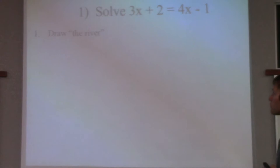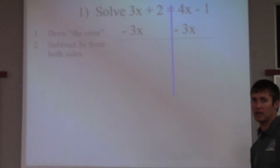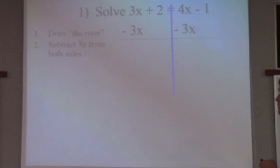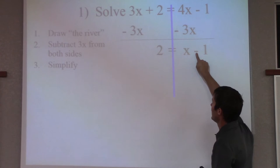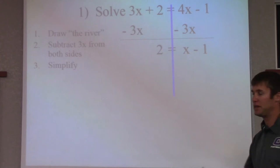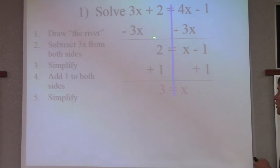So we take the equation, draw a river, and now look at it. Which number is smaller, 3 or 4? Well, 3 is smaller, so we're going to move that first. We would subtract 3x from both sides. So 3x minus 3x cancels out. 4 minus 3 would just be x. Now we're just looking at this right-hand side. I have minus 1, so how do I get rid of 1? The opposite of subtracting 1 would be adding 1. So I add 1 to each side, and my answer is 3.